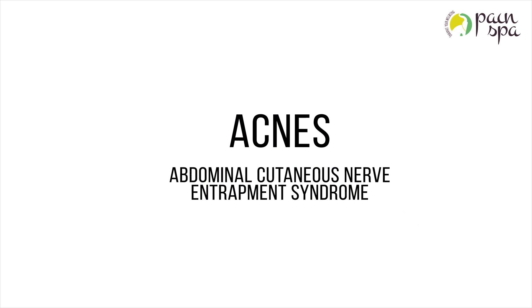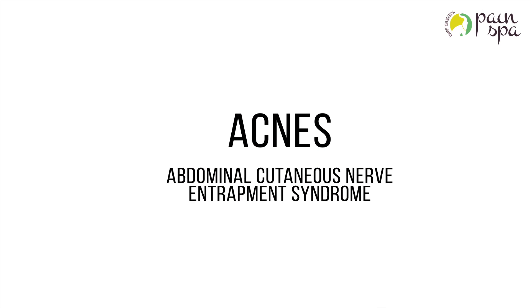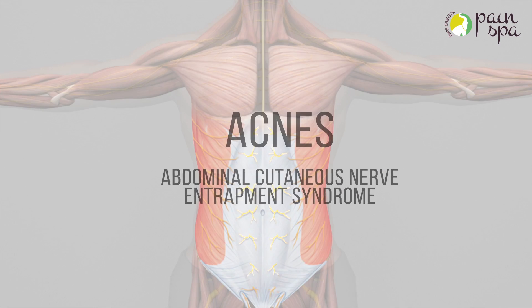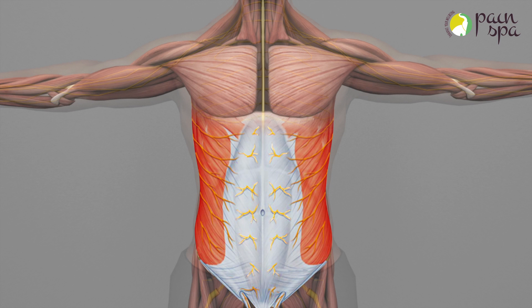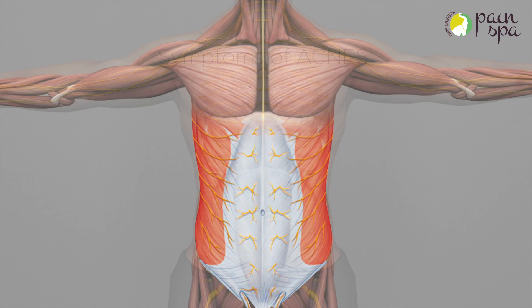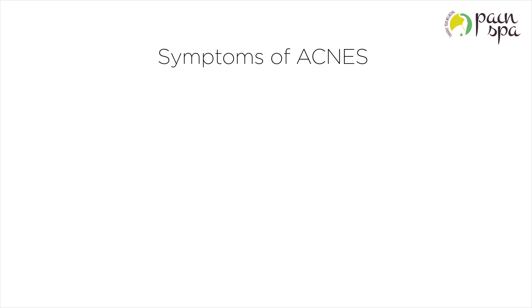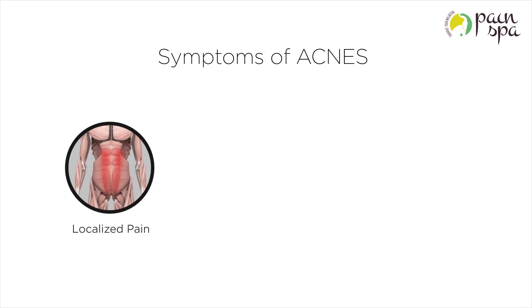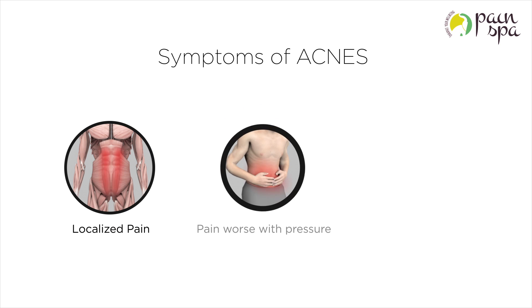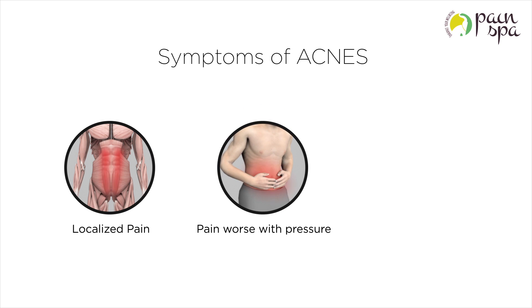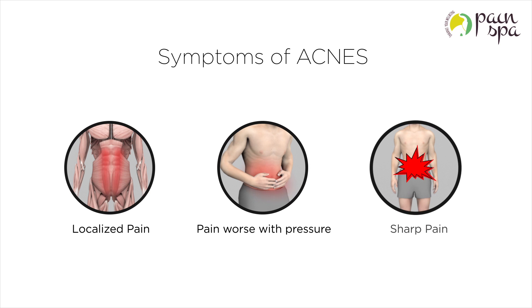Abdominal Cutaneous Nerve Entrapment Syndrome, also known as ACNES, results from entrapment of the anterior branches of the intercostal nerves in the abdominal wall. Symptoms of ACNES include localised pain frequently at the edge of the rectus muscle. Pain is exacerbated with pressure on the area and is generally sharp in nature.